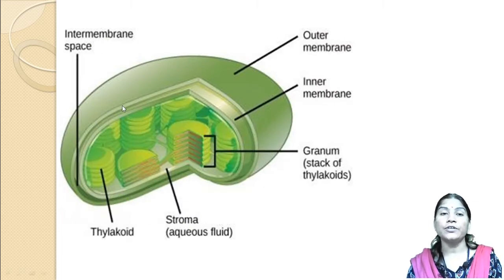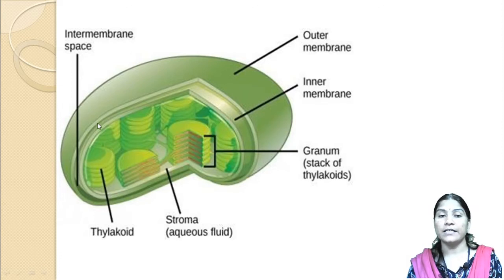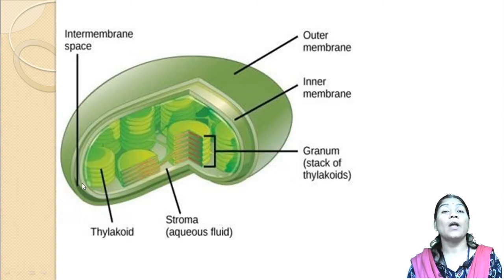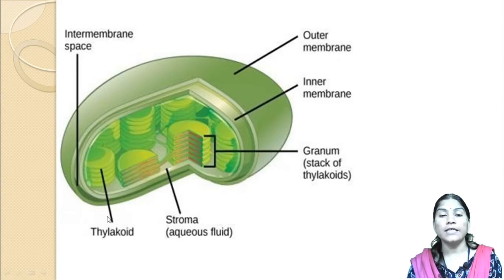These diagrams show the structure of the chloroplast. We know that chloroplast is a double membrane structure, having an outer and an inner membrane. In between these two membranes there is a space called the inter-membrane space. The stacks of thylakoids are called the granum, and the aqueous fluid-like structure present inside is called the stroma. The thylakoids are the sites for photosynthesis.